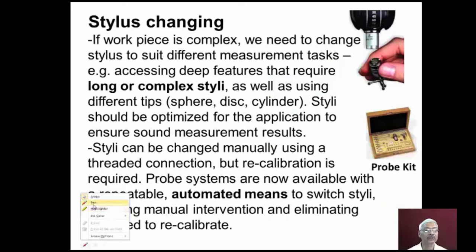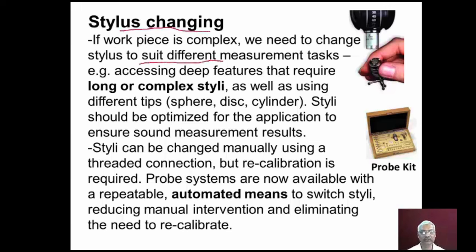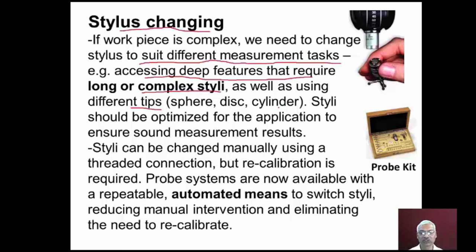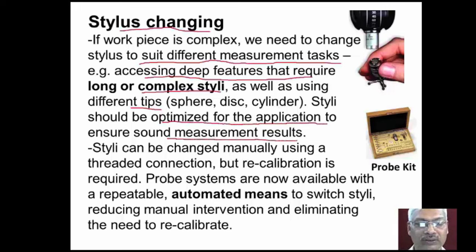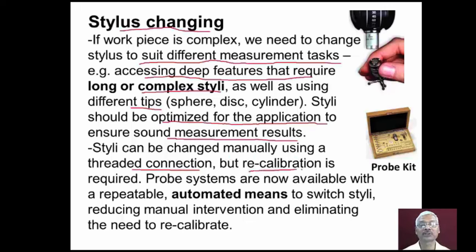Depending upon the inspection requirement, sometimes we need to change the stylus. If the workpiece is very complex, we need to change the stylus to suit different measurement tasks — for example, assessing deep features that require long and complex styluses, as well as using different tips like spherical, disc type, and cylindrical type for measurement of threads. Styluses should be optimized for the application to ensure sound measurement results. Styluses can be changed manually using a threaded connection, but whenever changed manually, recalibration is essential. Probe systems are now available with repeatable automated means to switch styluses, reducing manual intervention and eliminating the need to recalibrate.